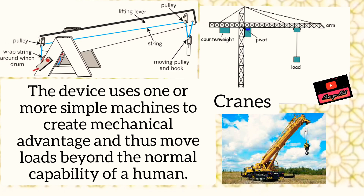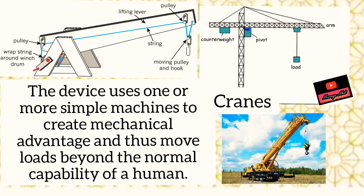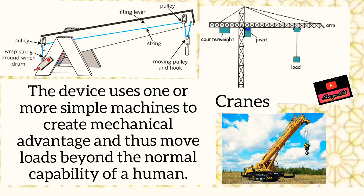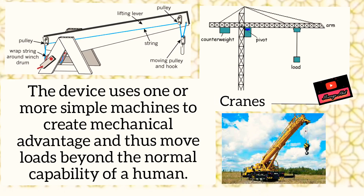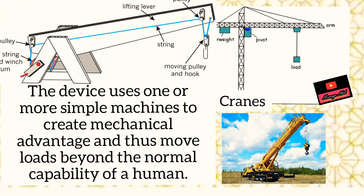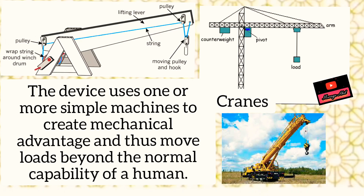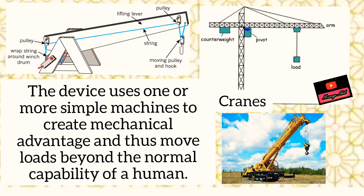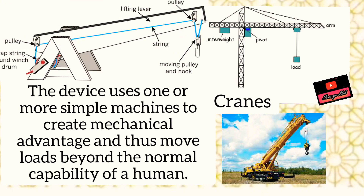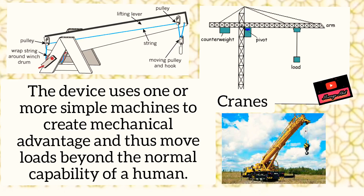This picture that is moving is showing you where a lever is used, where a wheel and axle is used, and where the pulleys are used. The device uses one or more simple machines to create mechanical advantage and can move loads beyond the normal capability of a human.